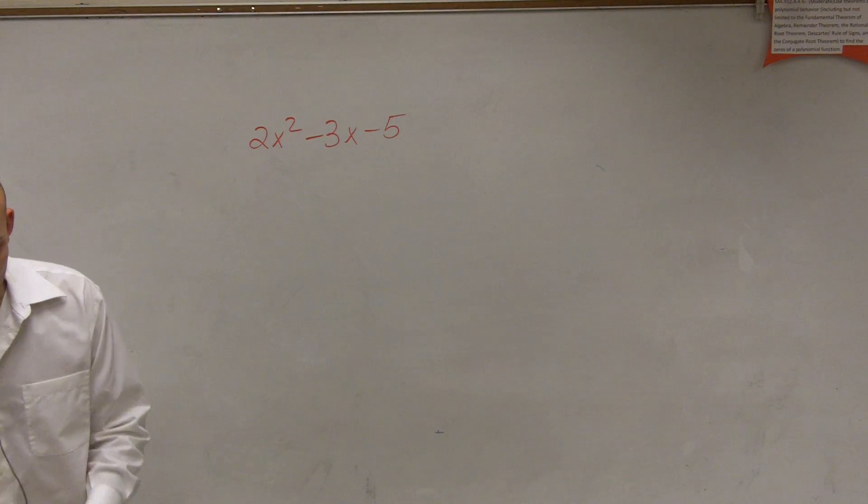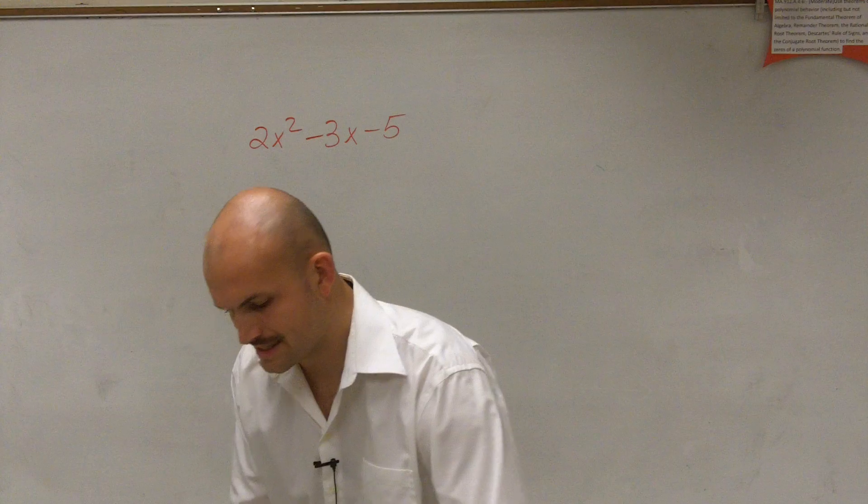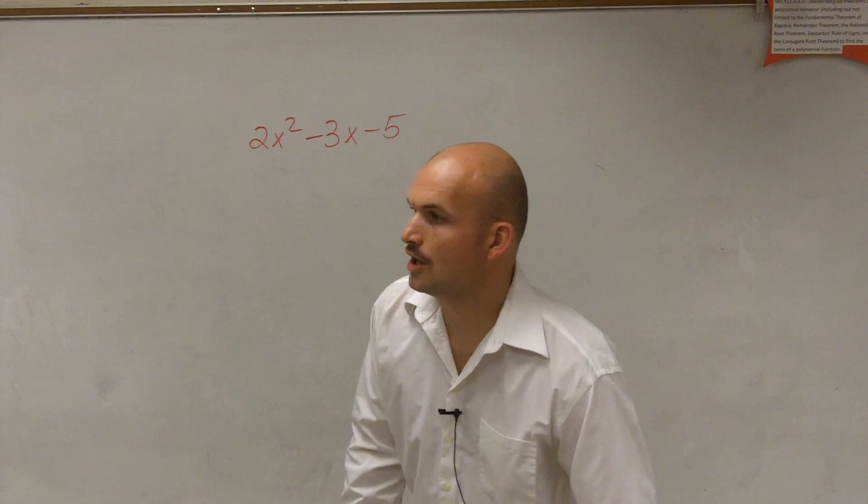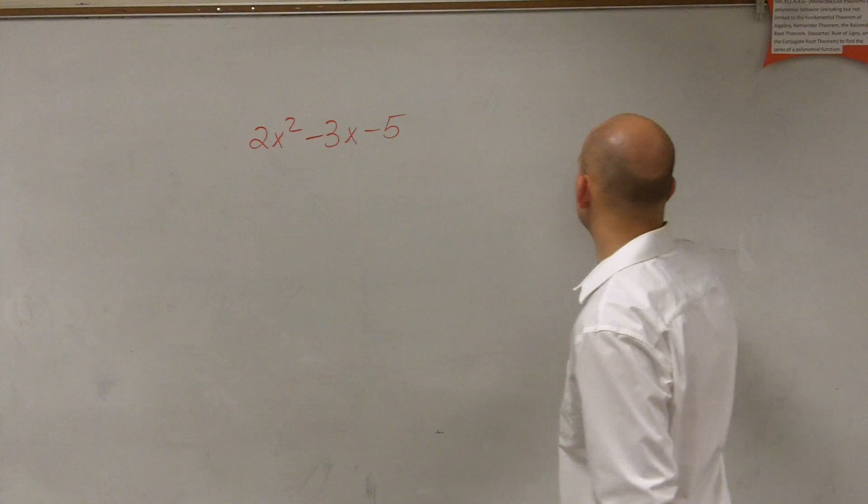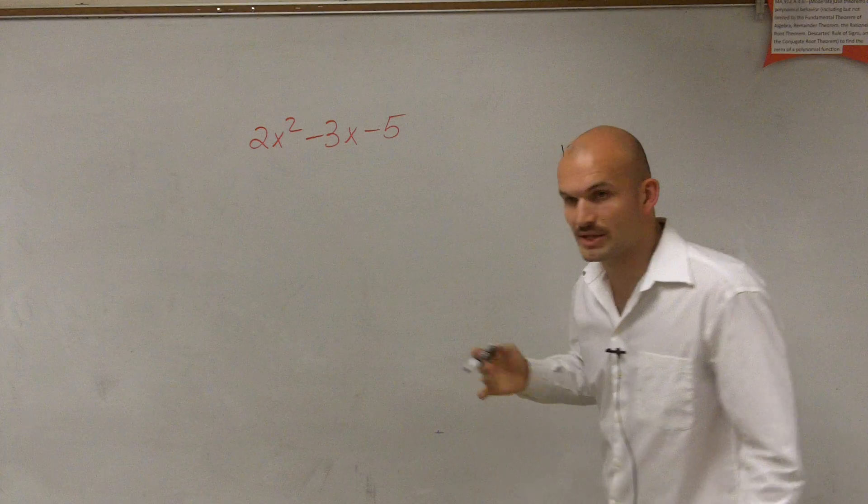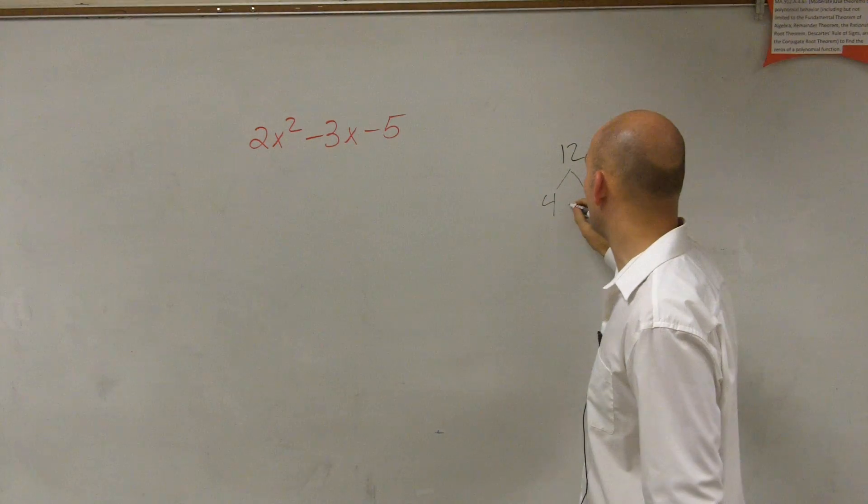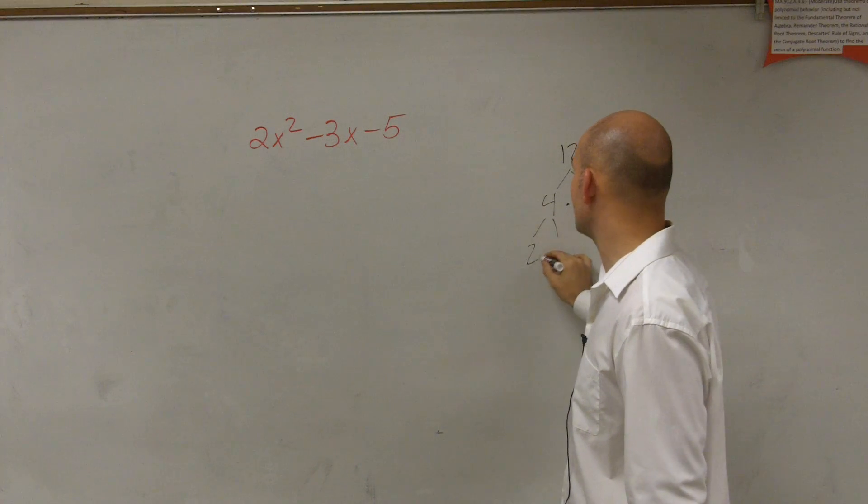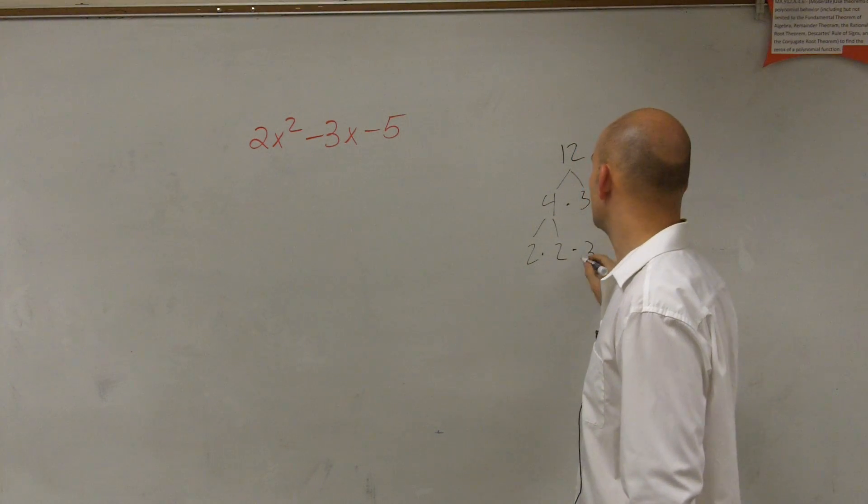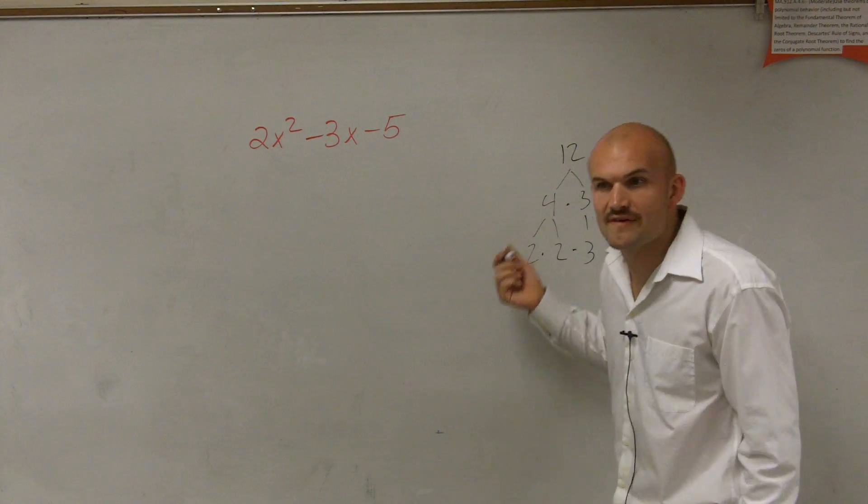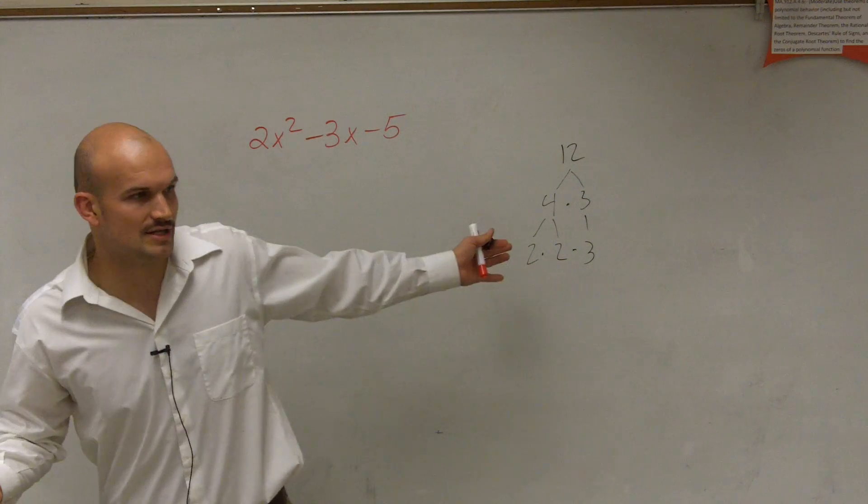Definition of factoring is when we took a number, that was to write it as a product of numbers. So if I said factor the number 12, do you guys remember like your factor tree? You guys could say you could do 4 times 3, and then you broke that down into 2 times 2 times 3. That was factoring.